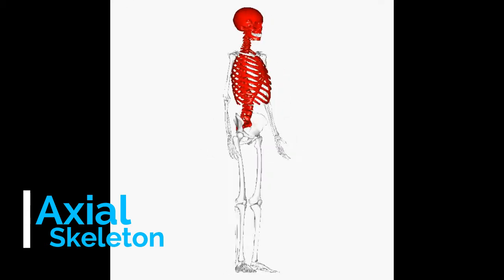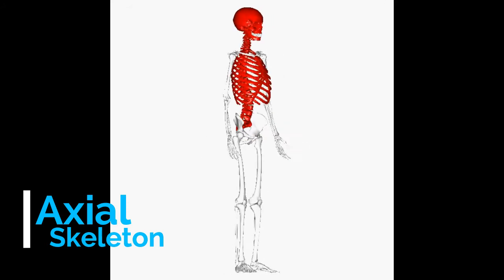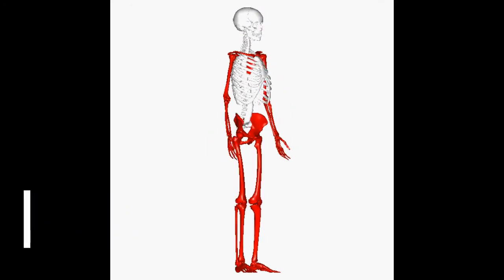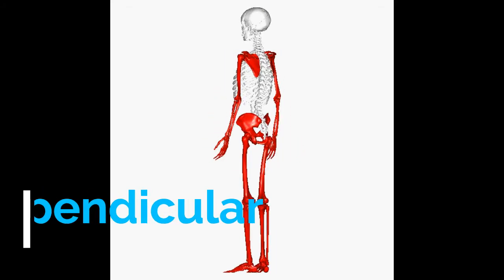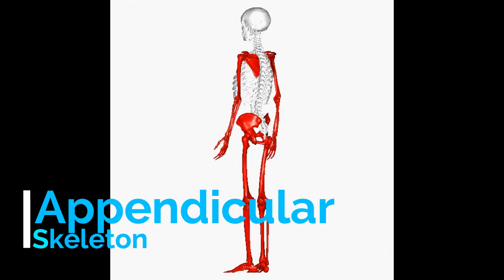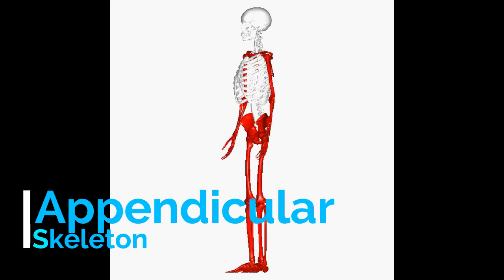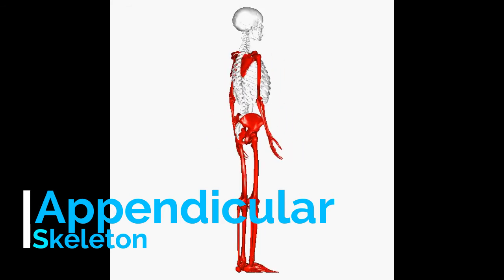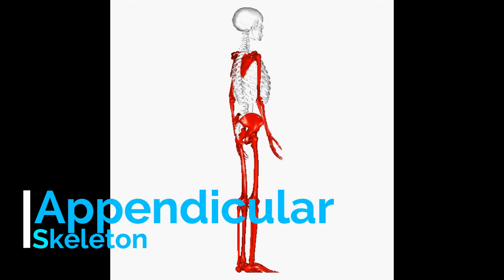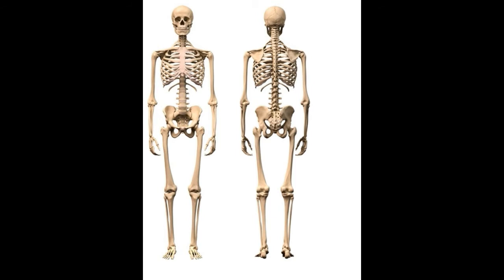Those are the bones primarily there for protection and form the real centre of our bodies. If we imagine we're an action figure or a Lego man, we've got the head and the body — at the moment, no limbs. This is where the second type of skeleton comes in: the appendicular skeleton, which is essentially the limbs. It includes any bone attached to the axial skeleton — things like your pelvis, your legs, and your arms. So anything that attaches to the axial skeleton is the appendicular skeleton — A-P-P-E-N-D-I-C-U-L-A-R.